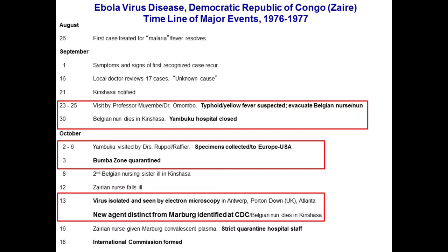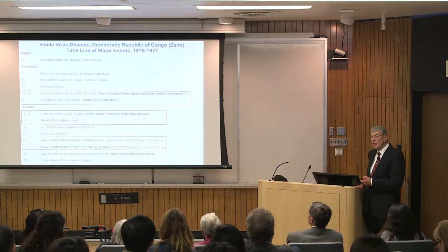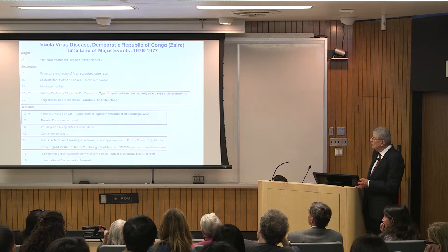The headmaster of the school in this community — a famous person — then died of hemorrhagic fever. Over the next two weeks, another 17 cases occurred, most of whom died, and then Kinshasa was notified. The local doctor was very honest in saying he didn't know what it was.